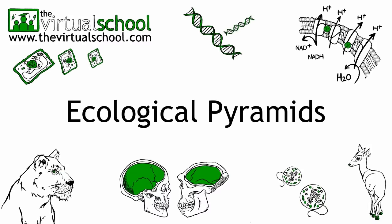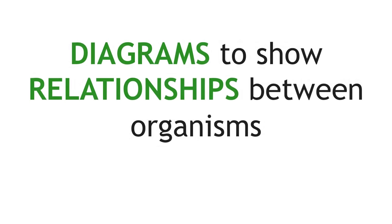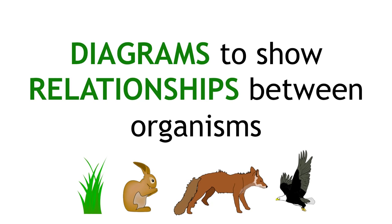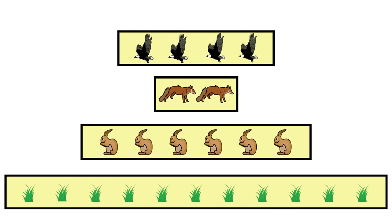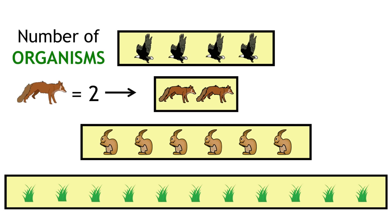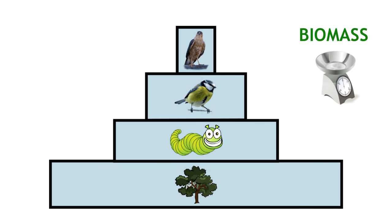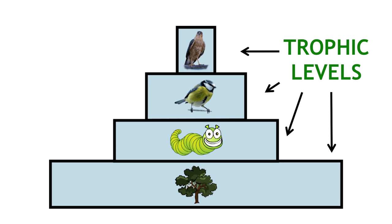Ecological pyramids are diagrams used to display quantitative data and show the relationship between organisms in an ecosystem. They are made up of bars stacked on top of one another. They can be used to show number of organisms or biomass of each trophic level in the ecosystem. They visually describe the quantities that we see in food chains and food webs.